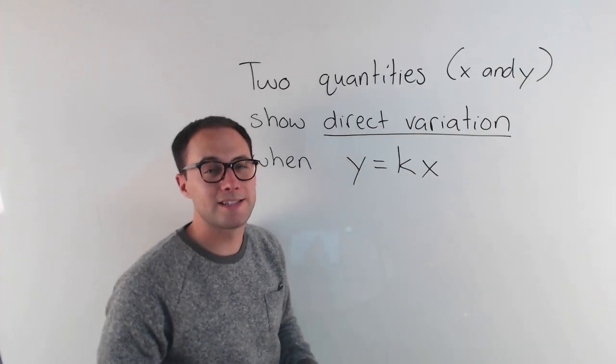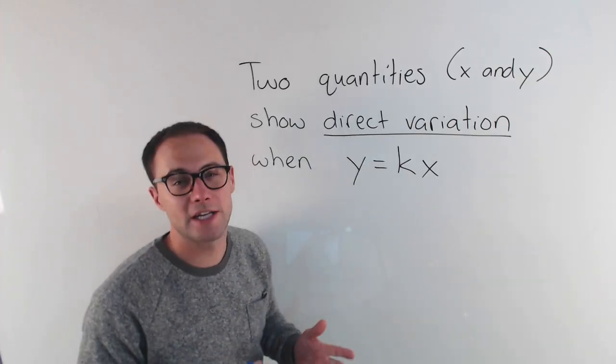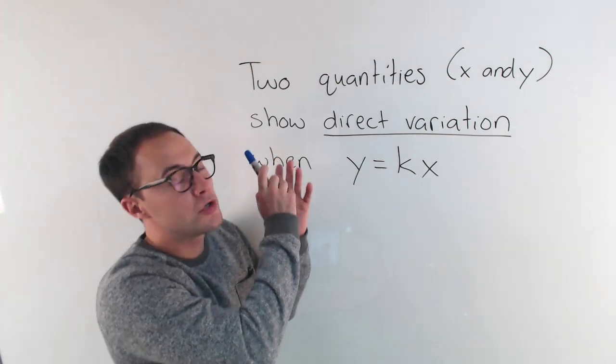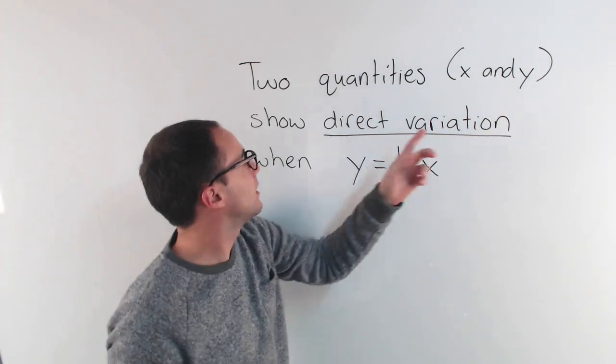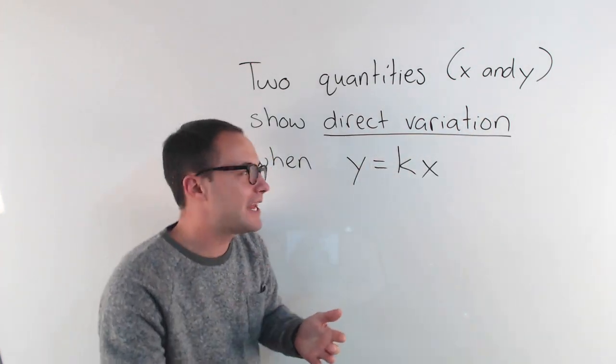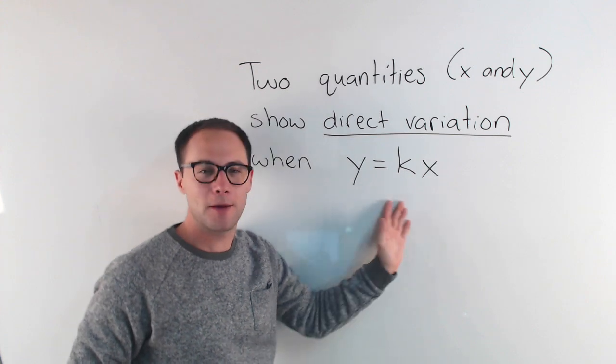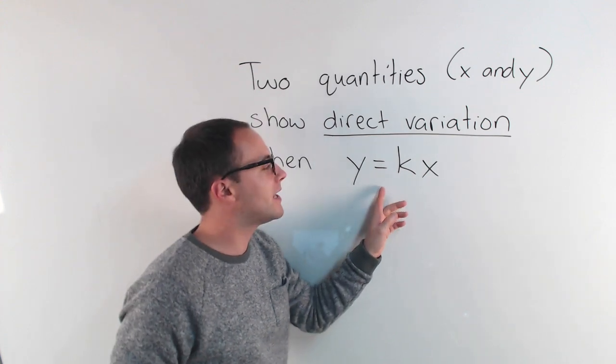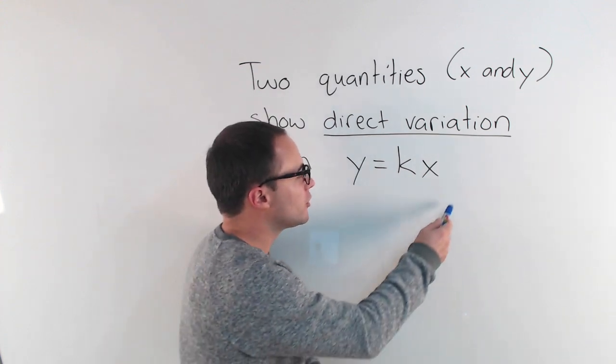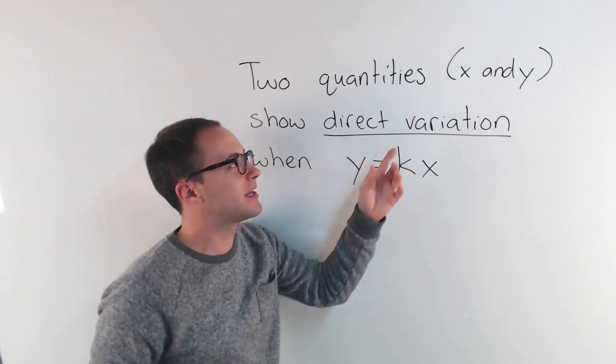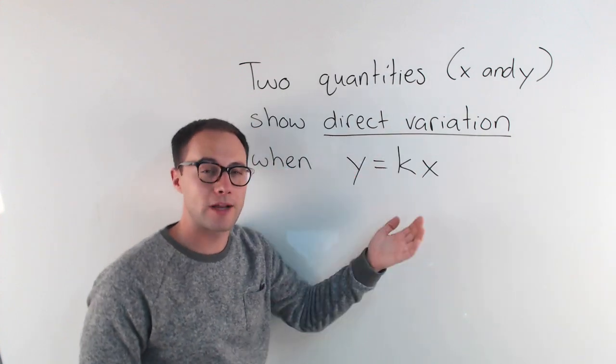Okay, before we get to an example, let's talk about direct variation for a moment. Two quantities, x and y, would show direct variation if you can write them in an equation like this, where y equals kx. If you can write an equation like that, then you would say x and y show direct variation.